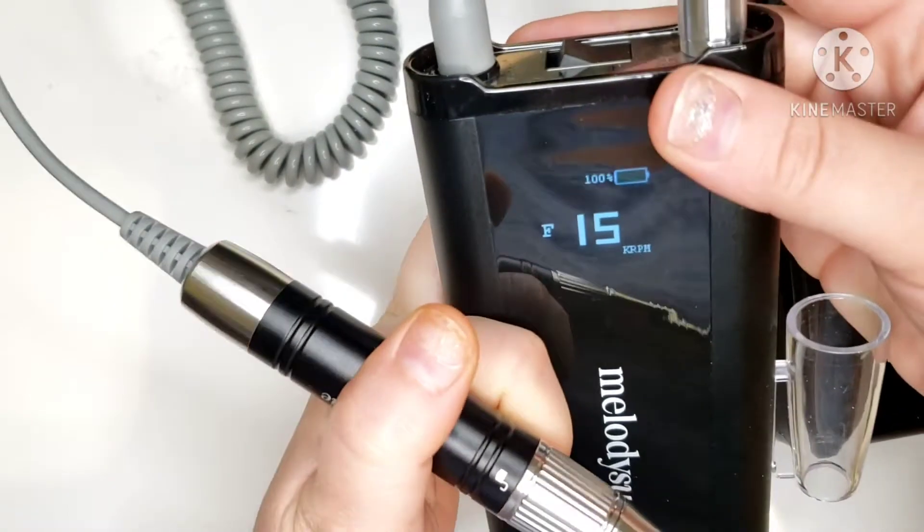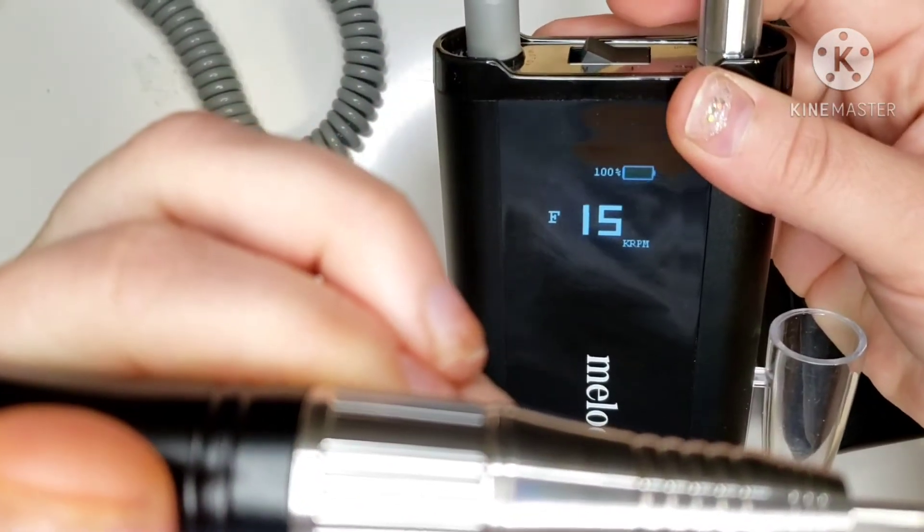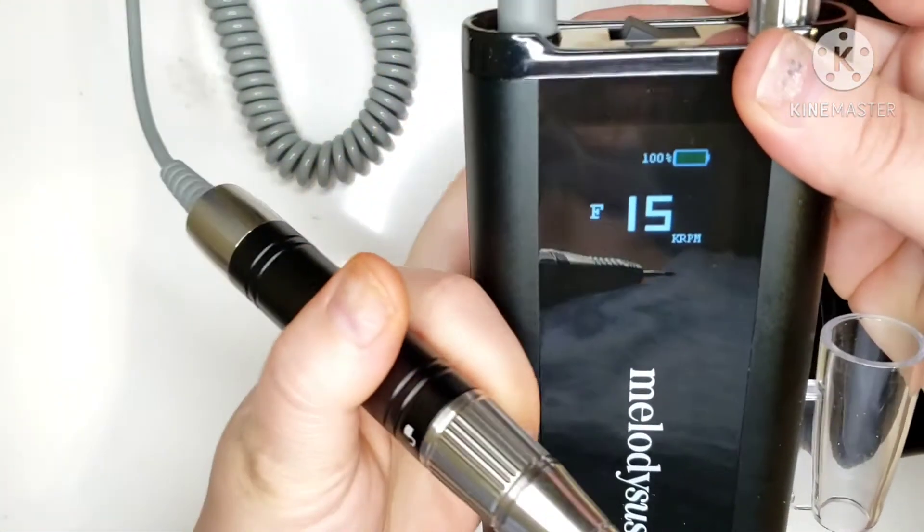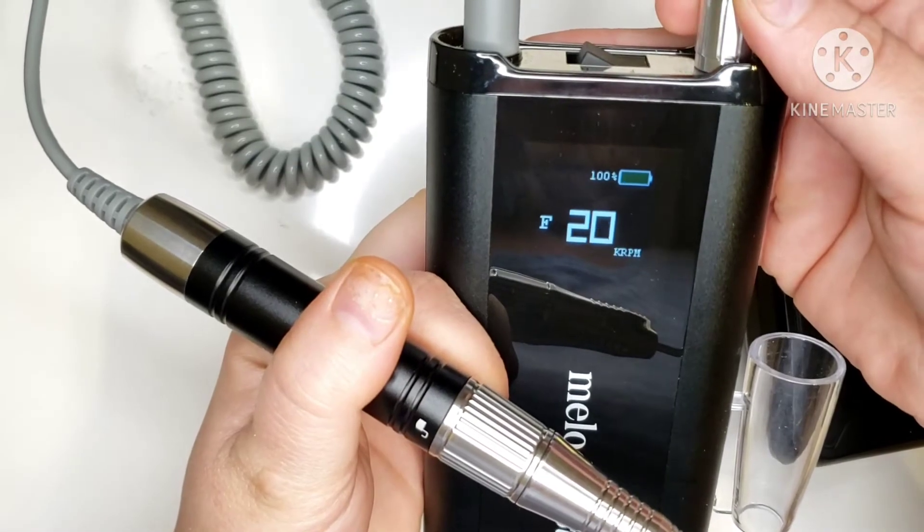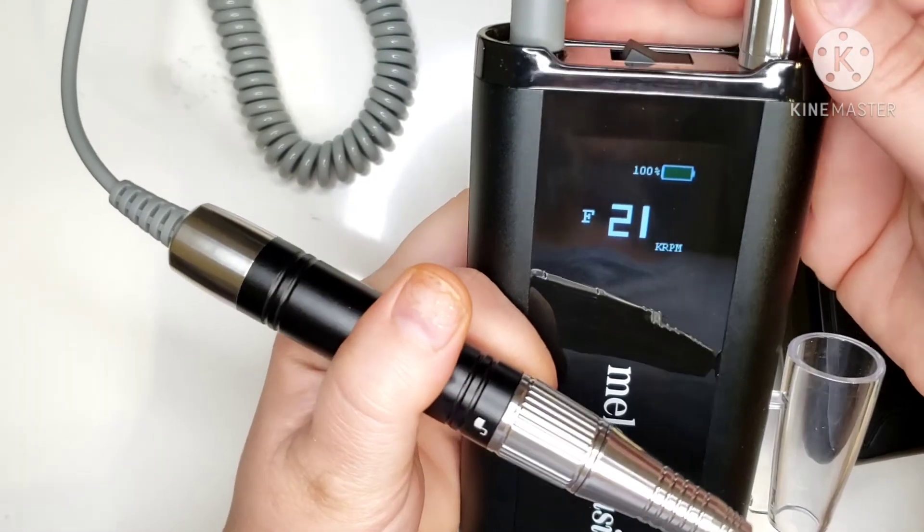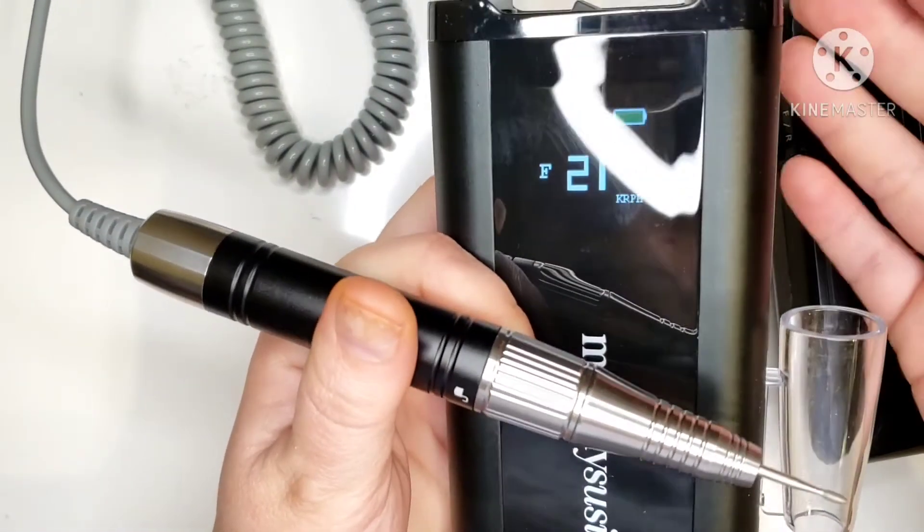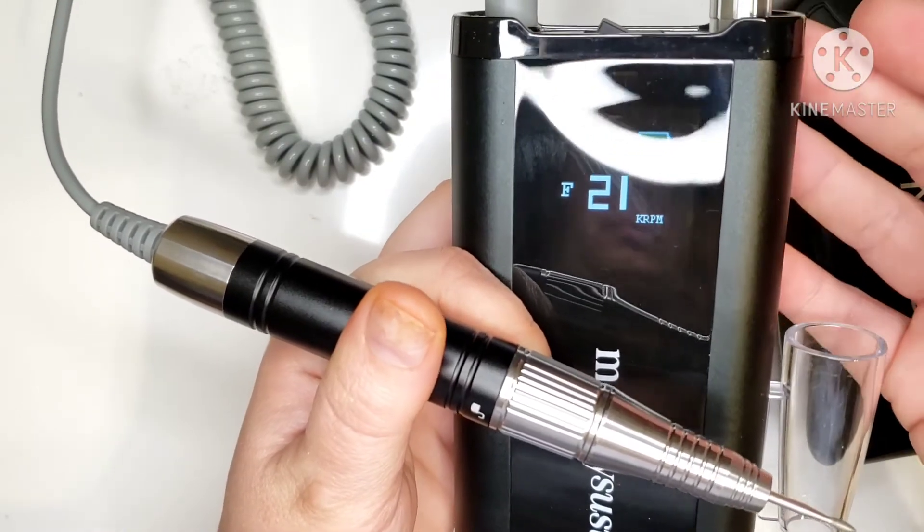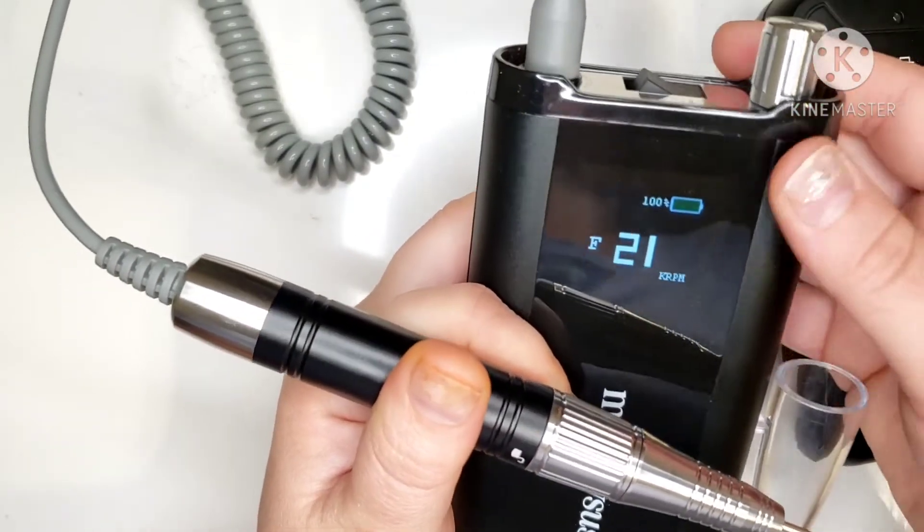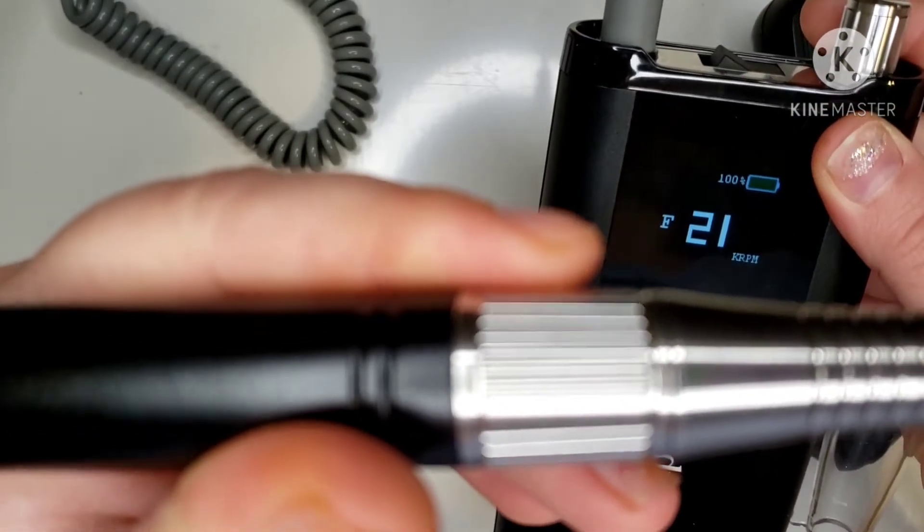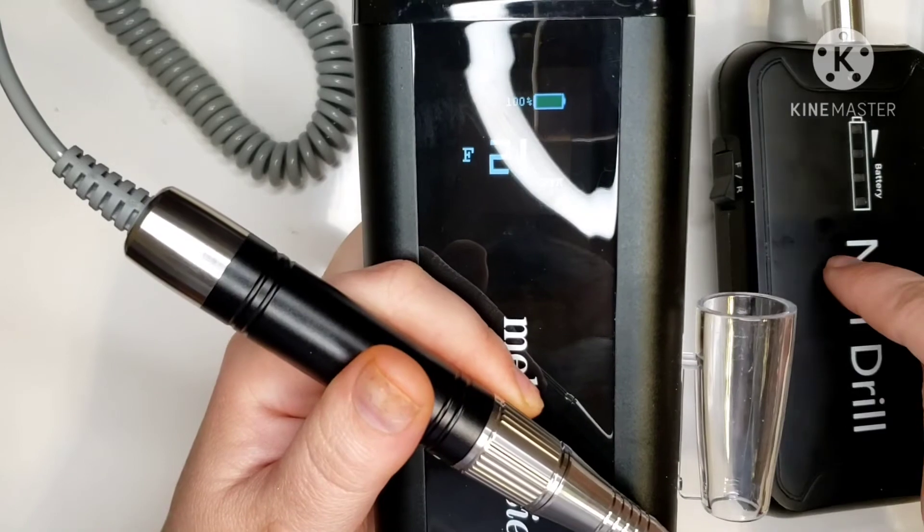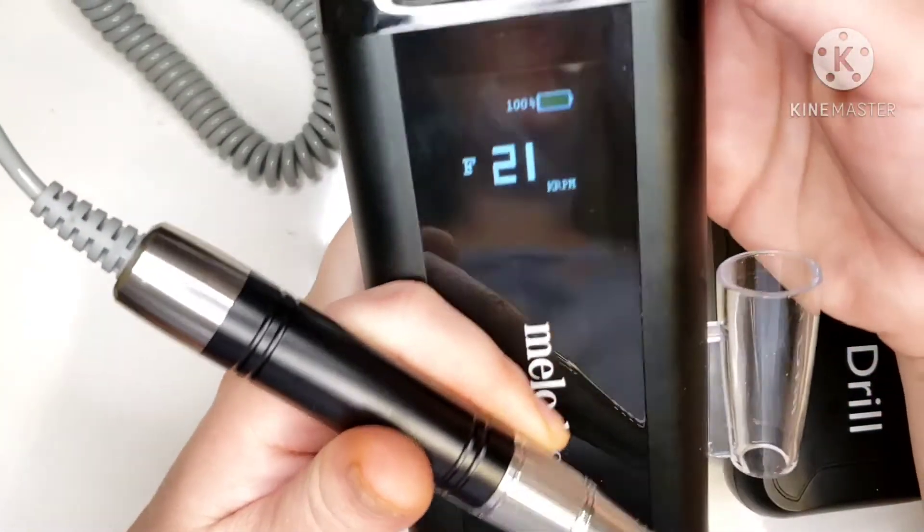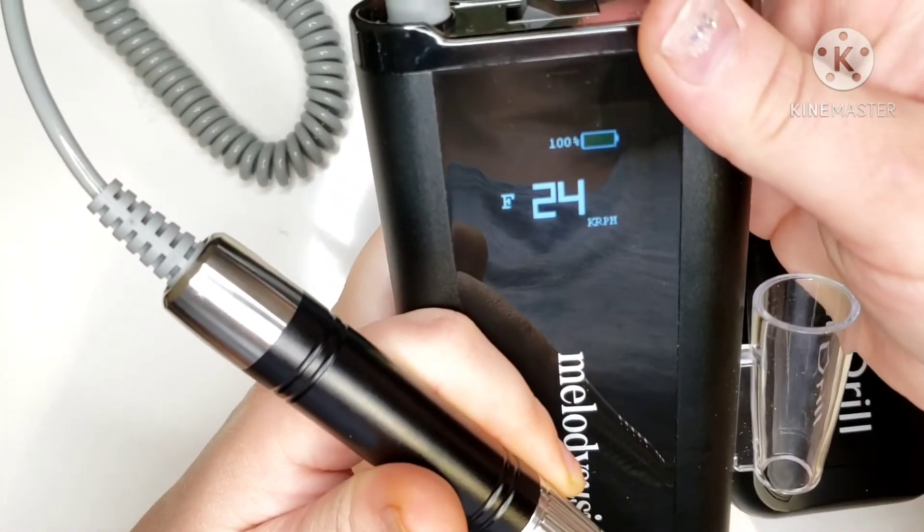We're at about 15. Still so quiet. Between 15 and 20,000 RPMs is where you're going to work with when you're taking some bulk off of the nail. Still so quiet. I'm pretty sure it's way quieter than this one. So we're going to test it out against this one as well.